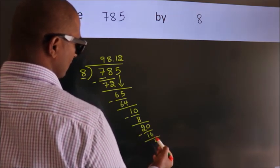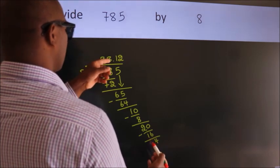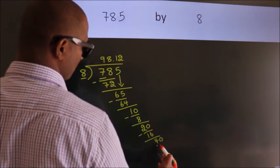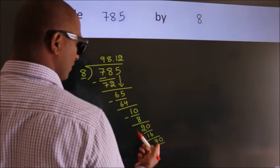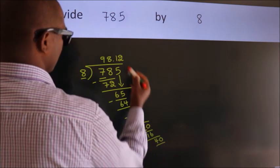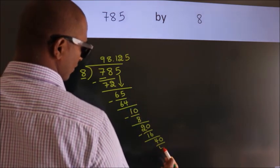After this, we already have the decimal. So directly take 0. So 40. When do we get 40? In 8 table. 8 fives, 40.